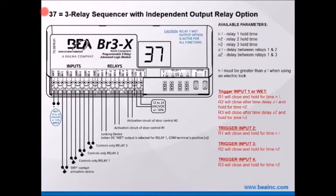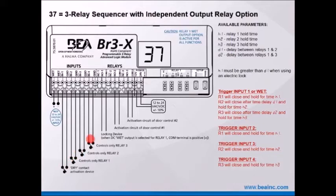Function 37 equals a three-relay sequencer with independent output relay option. Same scenario as function 36 — input one and ground is your input to start the sequence. Input two controls relay one, input three controls relay two, and input four controls relay three. Triggering inputs two, three, or four will only trigger their respective relay individually — it won't start the full sequence.